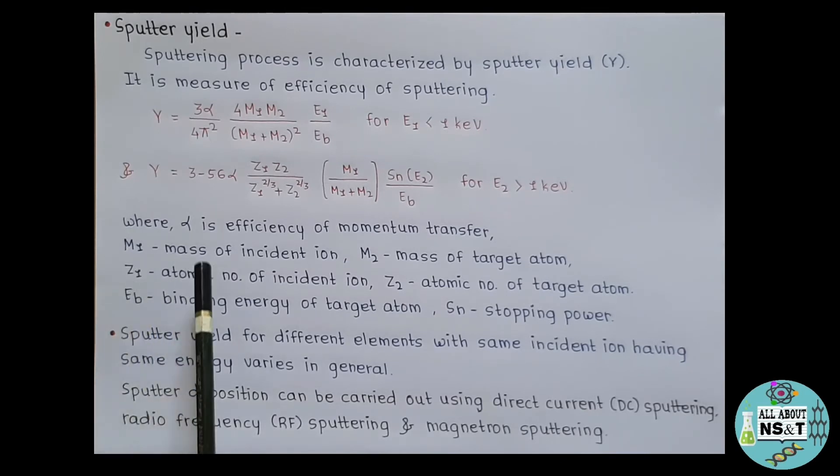Where alpha is efficiency of momentum transfer, M1 is mass of incident ion, M2 is mass of target atom, Z1 is atomic number of incident ion, Z2 is atomic number of target atom, Eb is binding energy of target atom and Sn is stopping power. This Sn is the energy loss per unit length due to nuclear collisions.